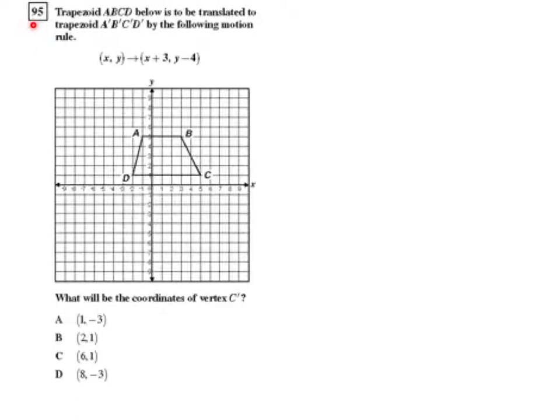Question 95 from the Geometry CST release test questions. Trapezoid ABCD below is to be translated to trapezoid A'B'C'D' by the following motion rule. Your xy coordinates will get mapped to x plus 3 and y minus 4. So what will be the coordinates of vertex C'?